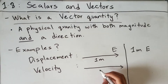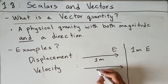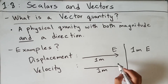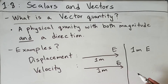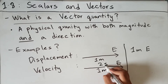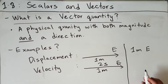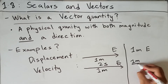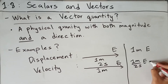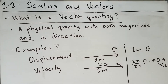Velocity is the distance displaced in a specified direction over a given time. If we travel 1 meter east and it takes 2 seconds, our velocity is 1 meter over 2 seconds eastbound, which simplifies to 0.5 meters per second east.